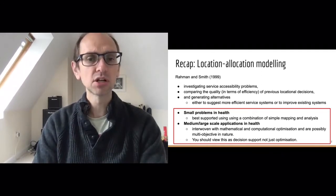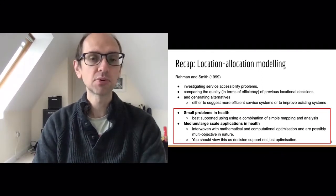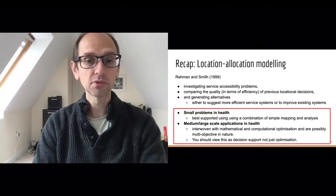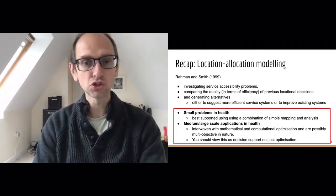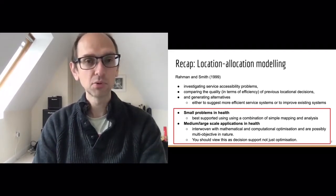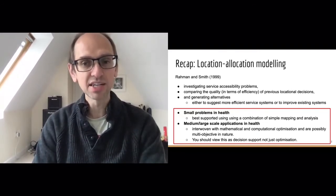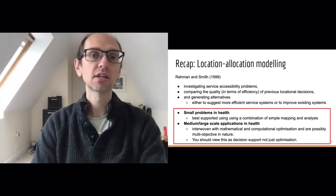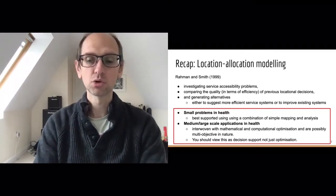But when we get to medium to large scale applications, we need to bring in some optimization theory, and there are different ways to do that. Today we're going to look at evolutionary algorithms. We do need to remember that we are trying to support people's decisions, not just solve an optimization problem — that's really important to remember. The optimal solution to your model isn't necessarily what decision makers want. They may want to see a variety of good solutions to help them pick what to do.